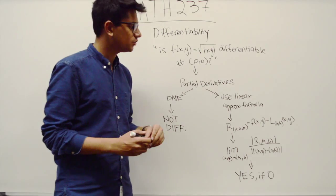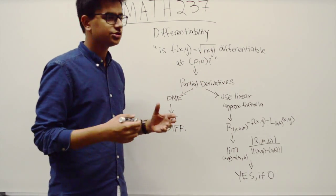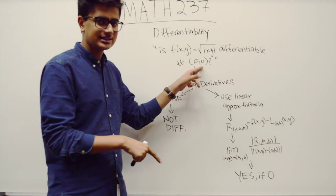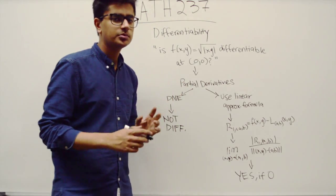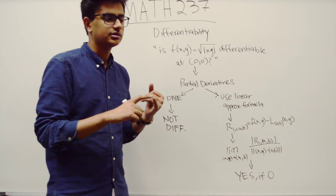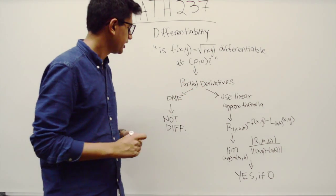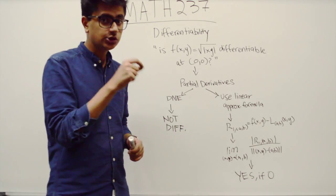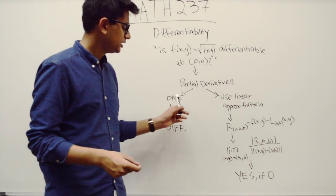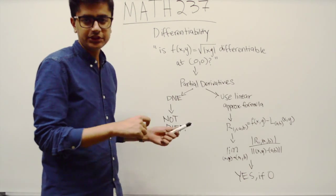The very first thing you need to do is start finding the function's partial derivatives. Since the question asks you to evaluate if it's differentiable at a specific point, you should probably use the definition of partial derivatives - use the limit to evaluate the partial derivatives with respect to x and y. If you find that either partial derivative does not exist, immediately you know that the function is not going to be differentiable at this point.